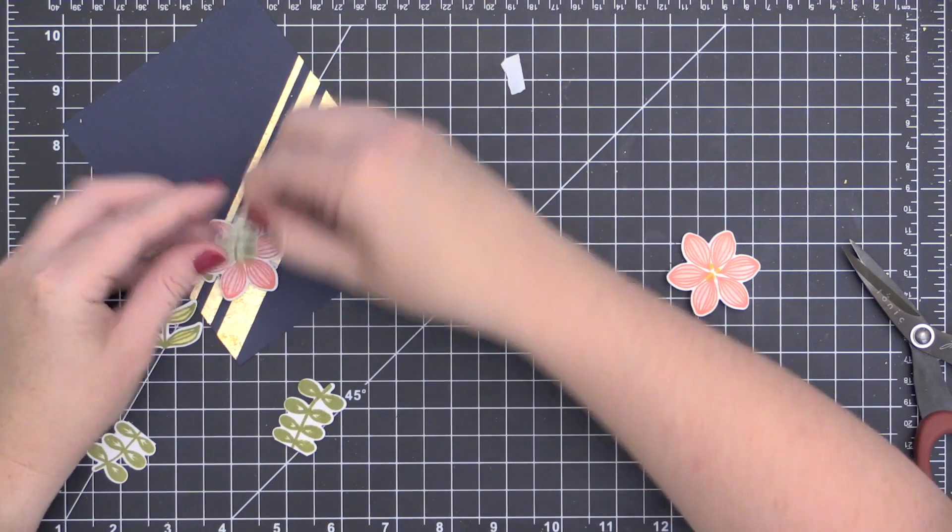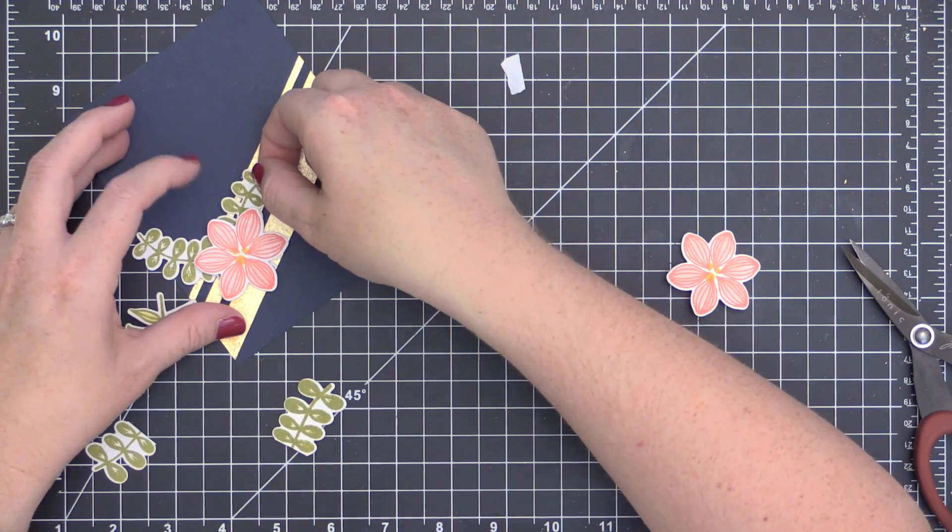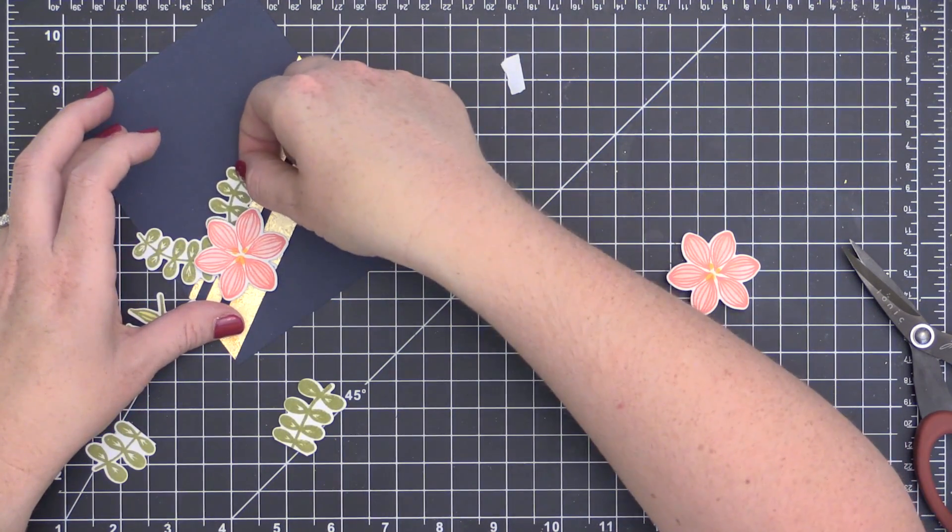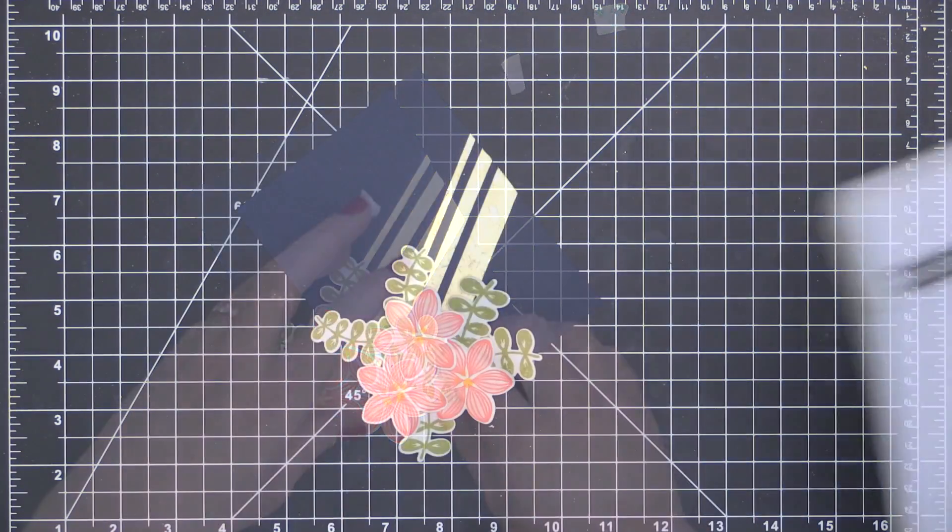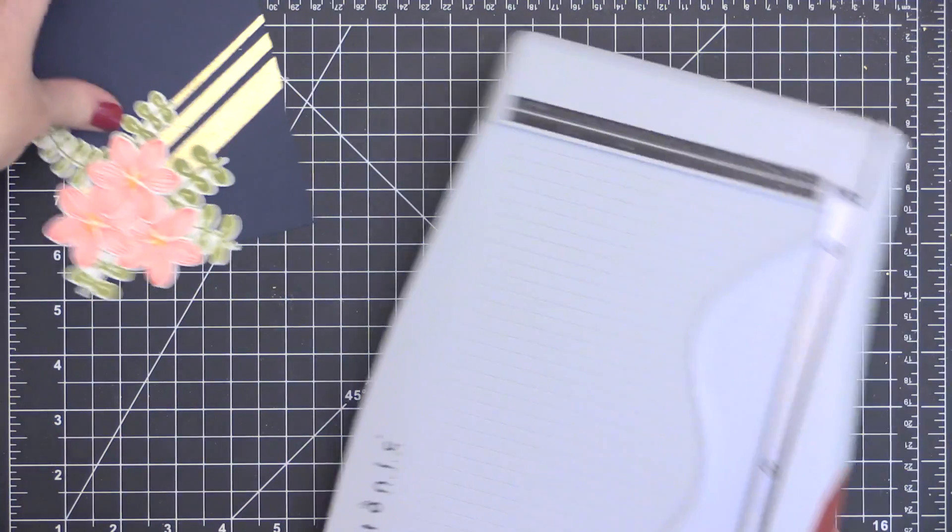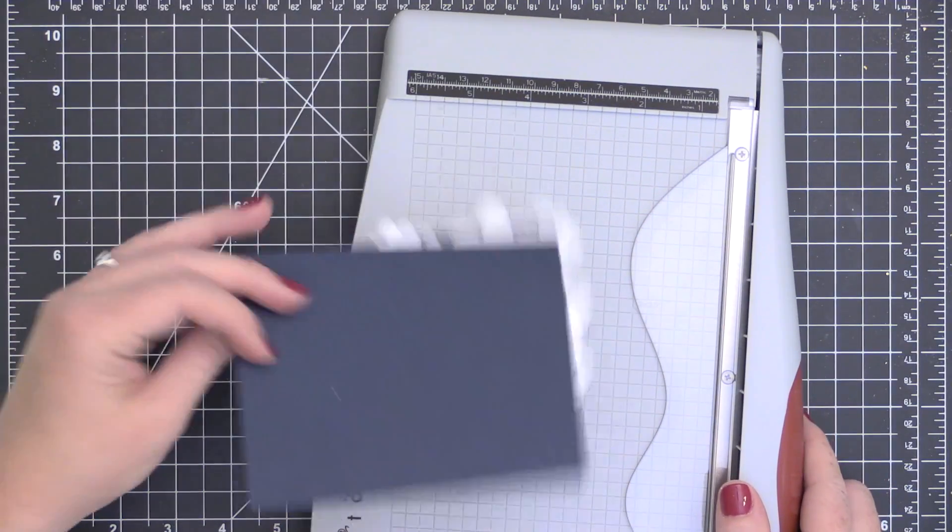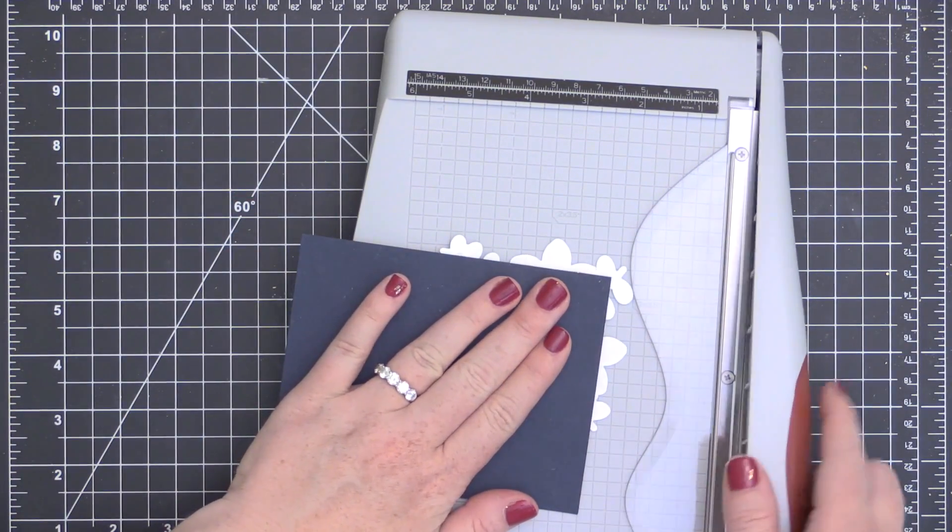Once I get this image colored in, I'm going to allow it to dry or heat set it with my heat tool. I use the coordinating dies to cut out all of my images. Now I'm just arranging them on my card front at varying depth, so I'm using different amounts of foam adhesive to create different depths for my images that are along the front, and some of them are hanging off.